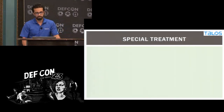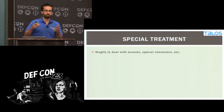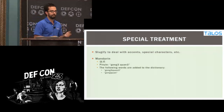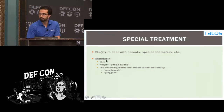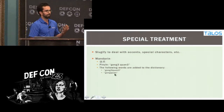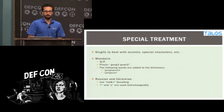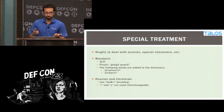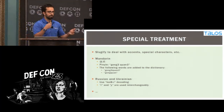For some of these words I need to do special treatments. For words coming from Eastern European languages, I need to remove accents from characters. For Mandarin, I need to translate characters to Roman characters using the Pinyin standard. For Russian and Ukrainian, I needed to use special decoding and also account for the fact that I and Y in that decoding are used interchangeably — along with a bunch of other special treatments.